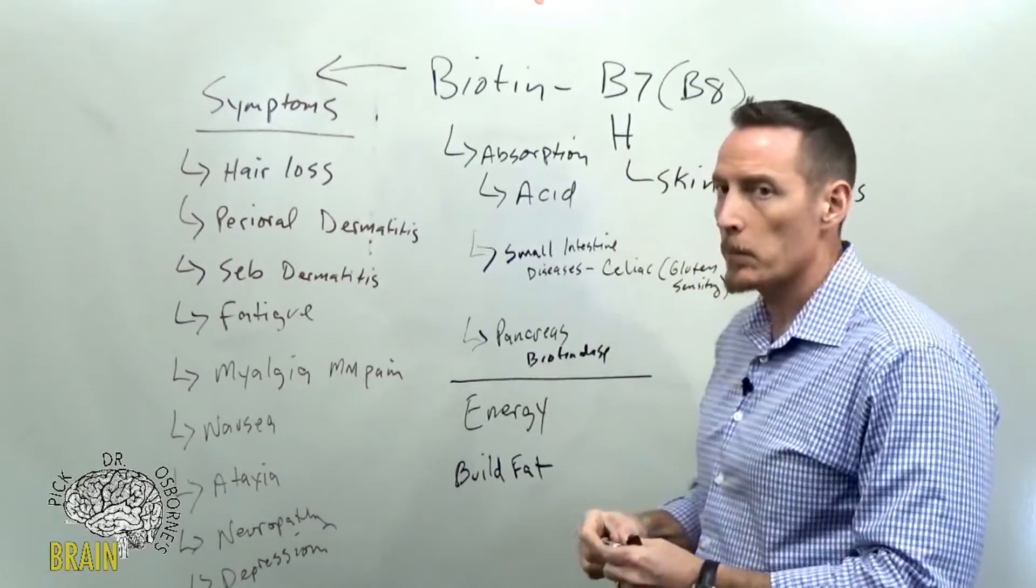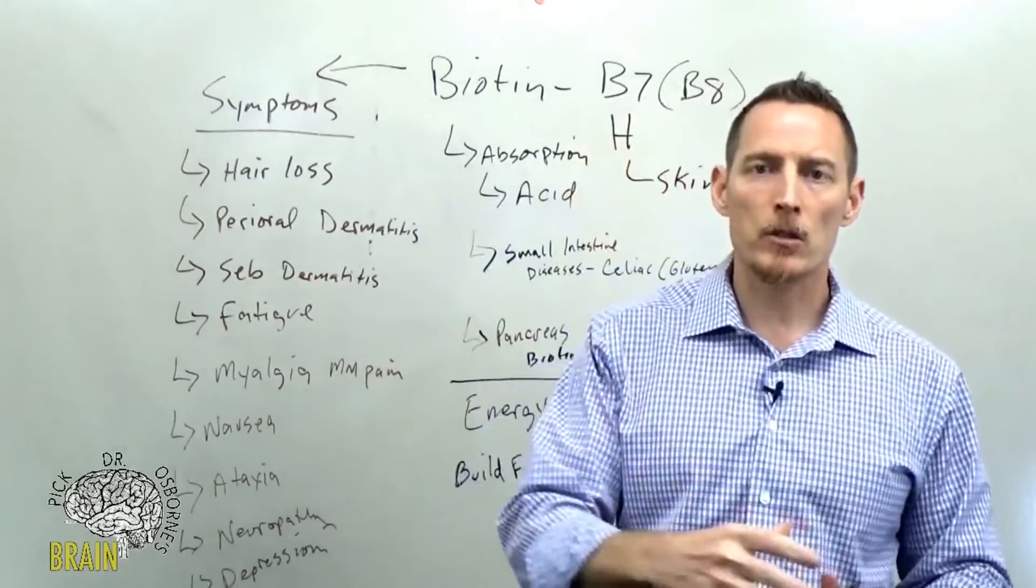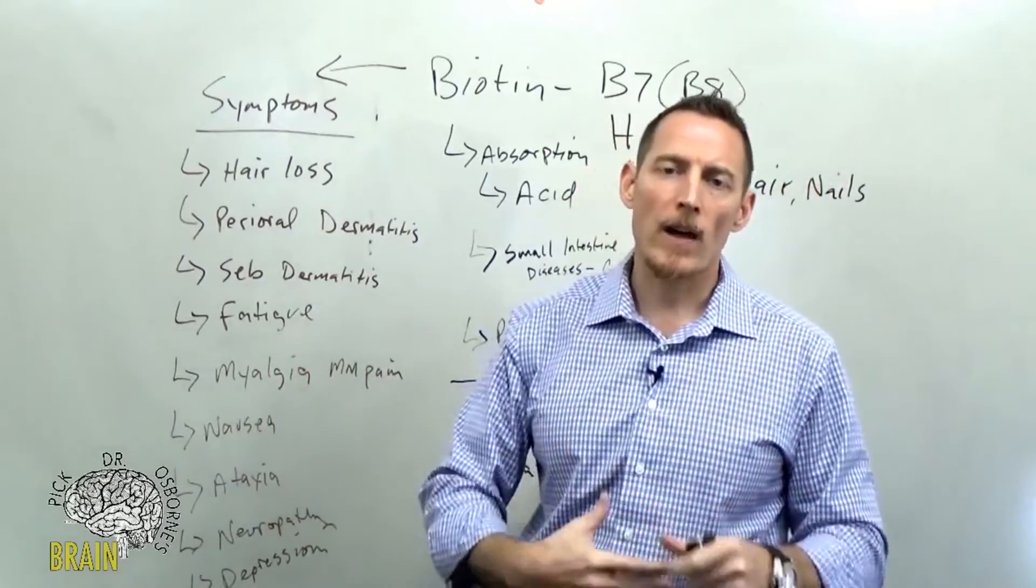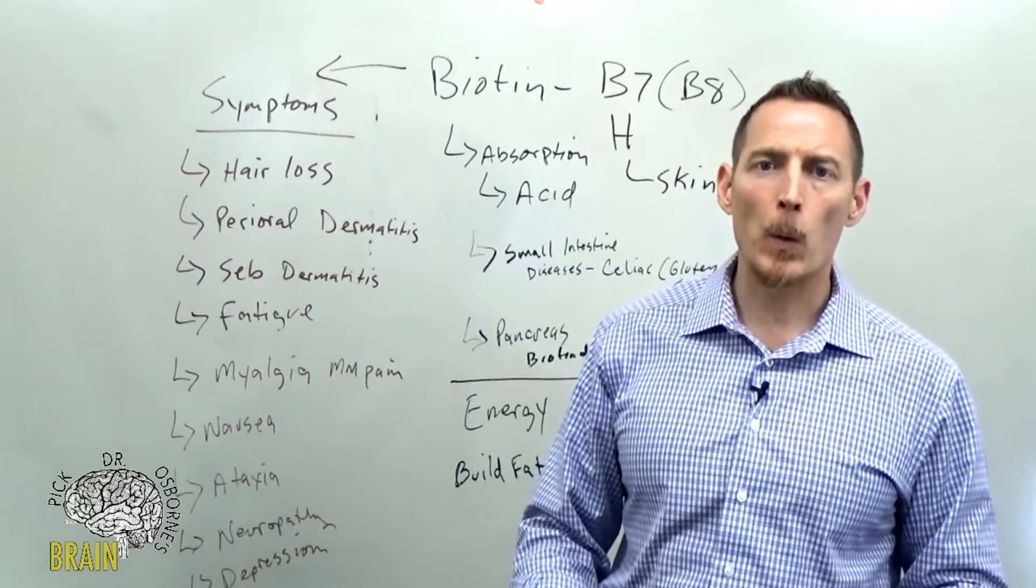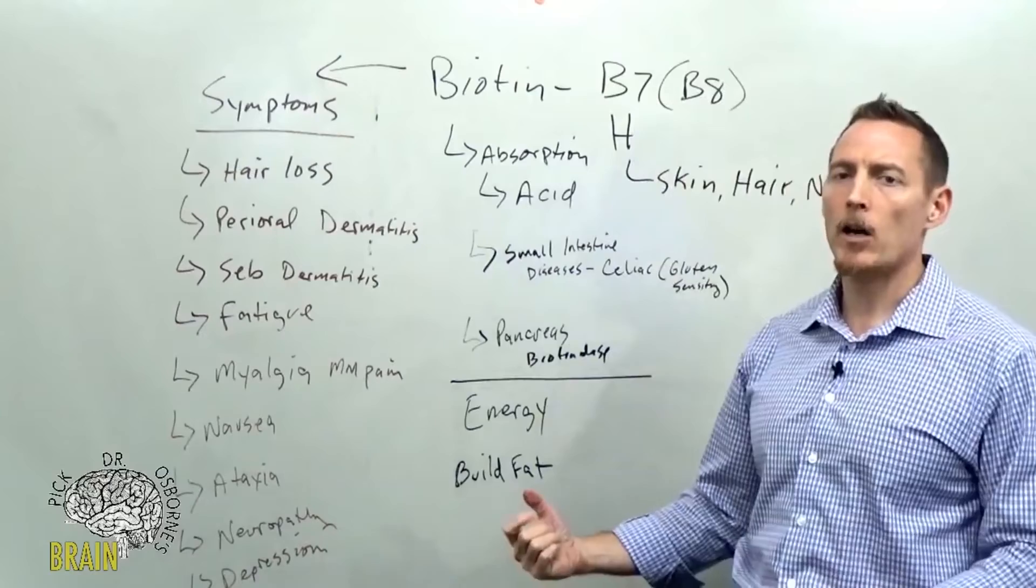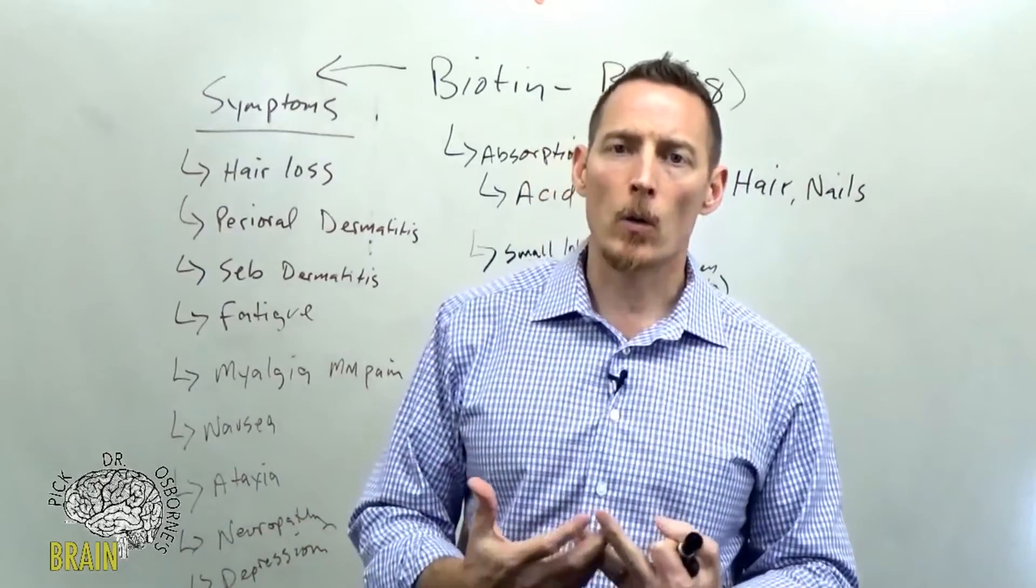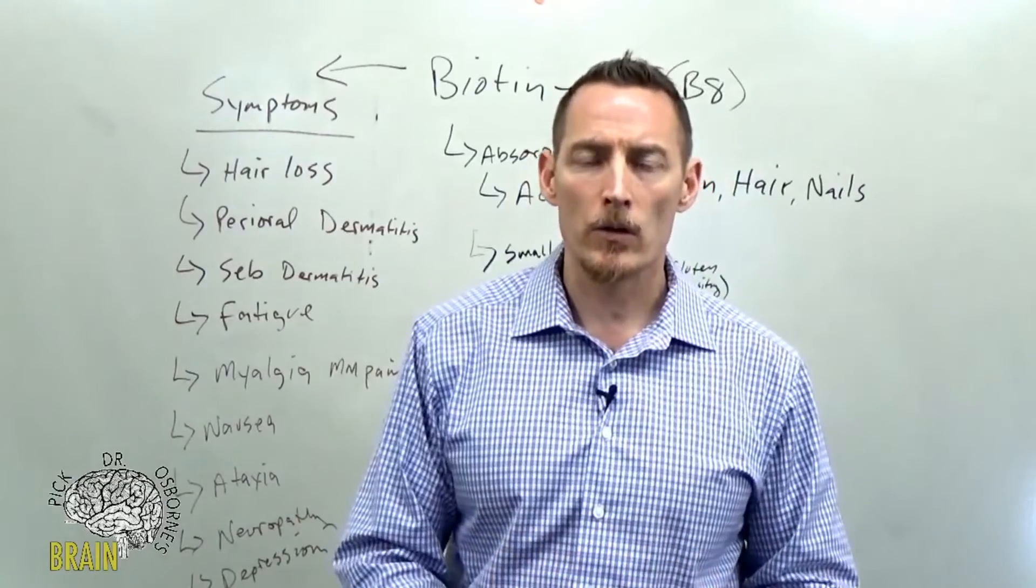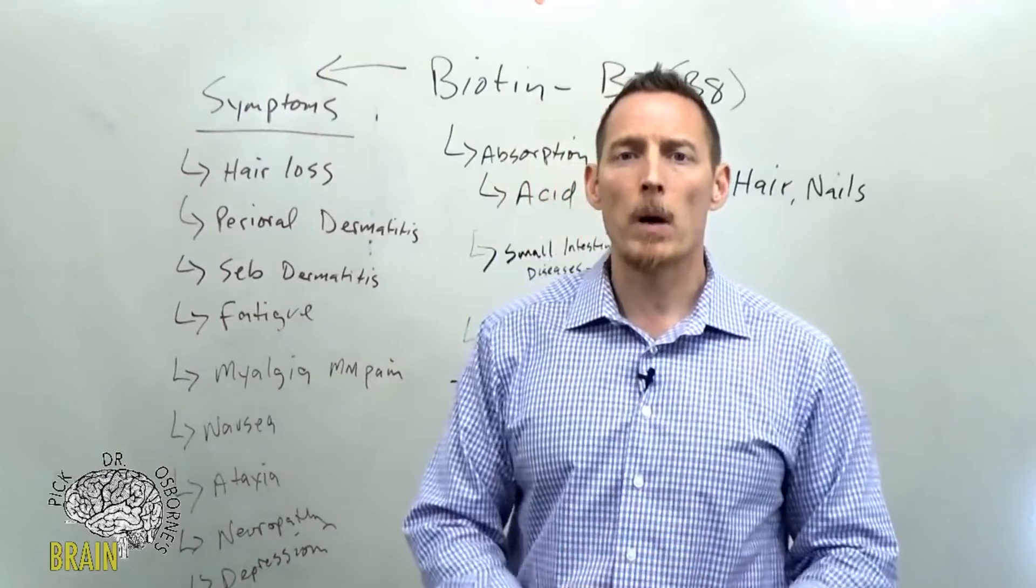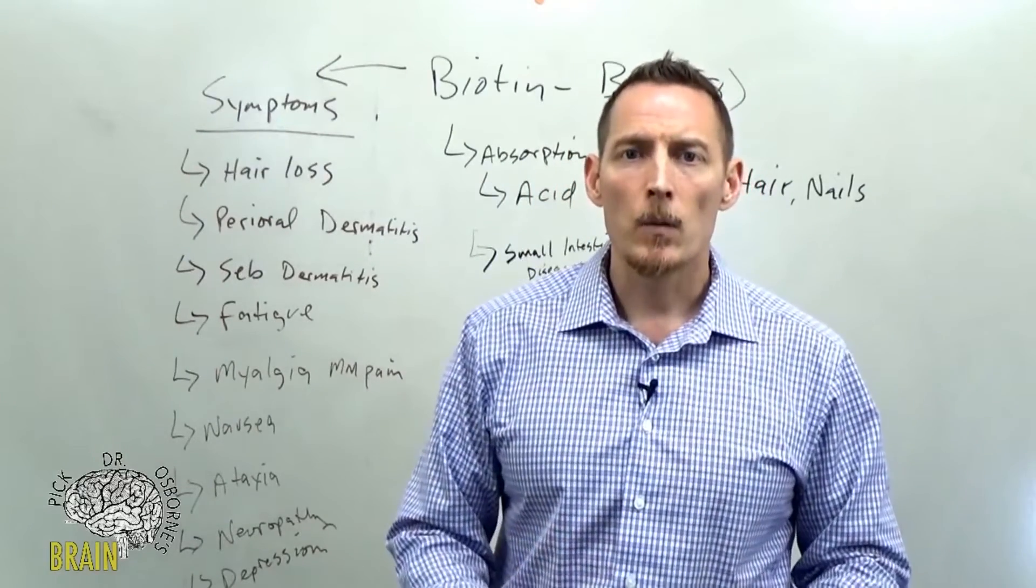Once it's absorbed, we said energy earlier, but energy is a process where we break down carbs, fats, and proteins to generate ATP. But we also use biotin to build fat. It's particularly important for biotin to aid in building fat. It helps to elongate long chain or longer chain fatty acids. This is very important—biotin is not just about breaking fat down, it's also about helping your body build fat.